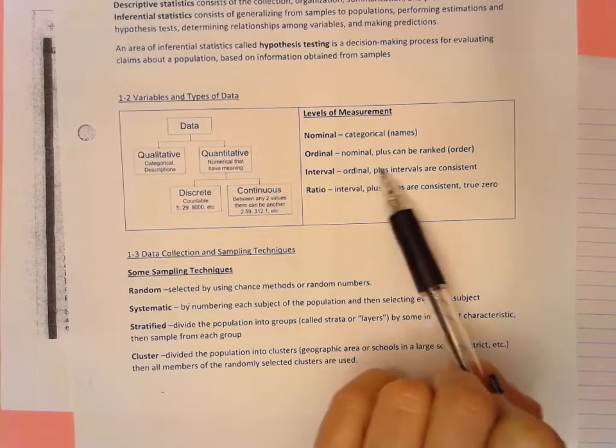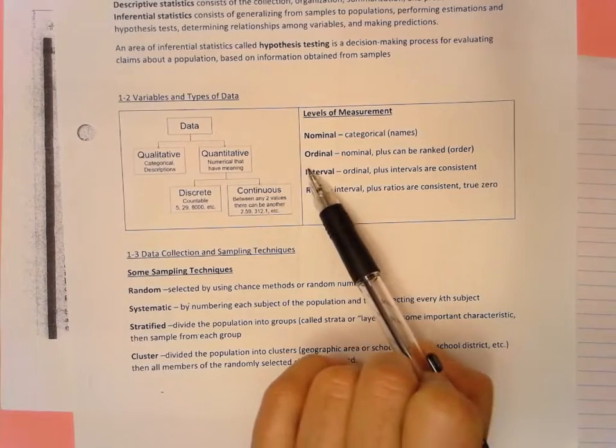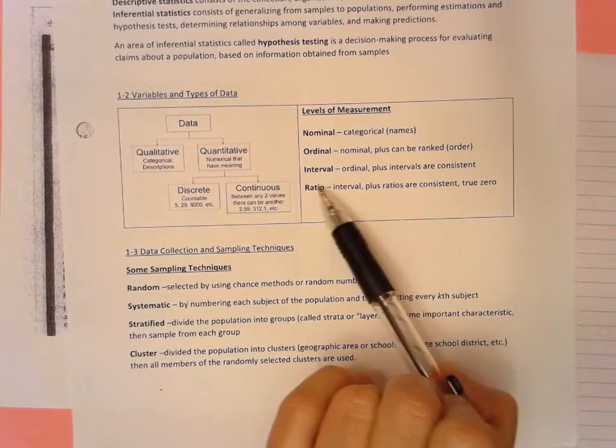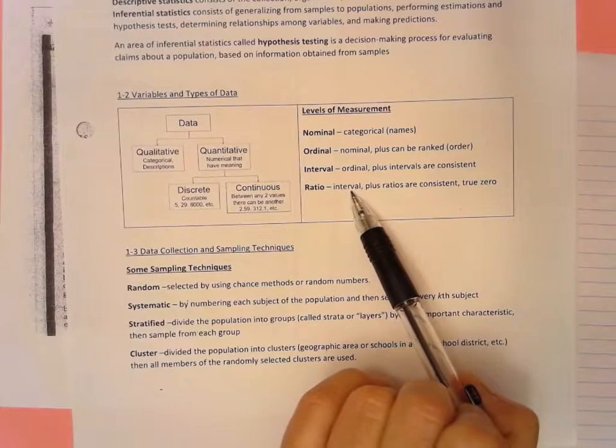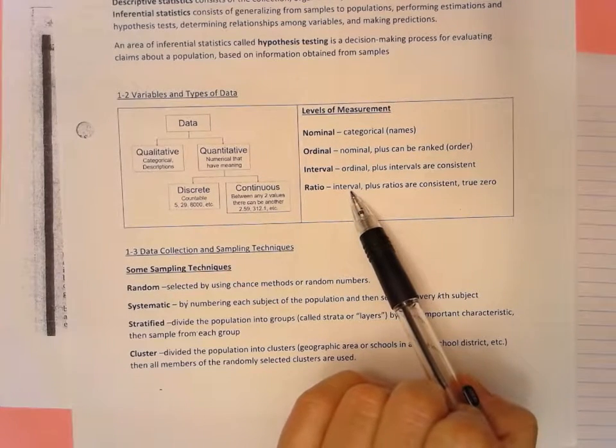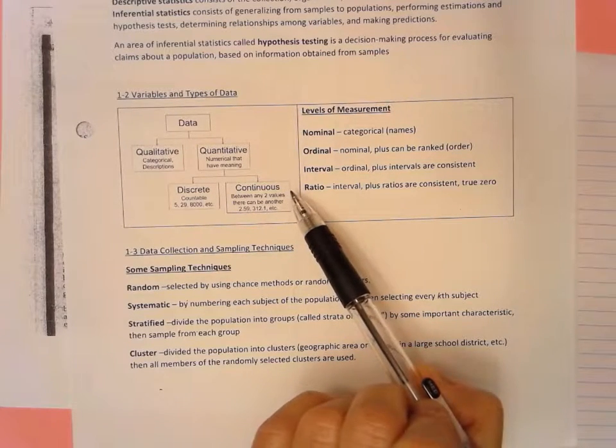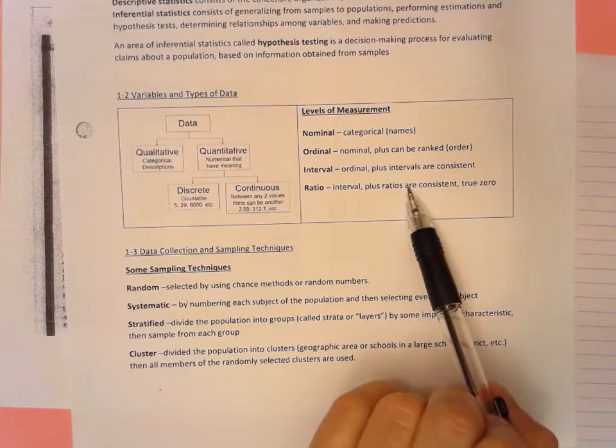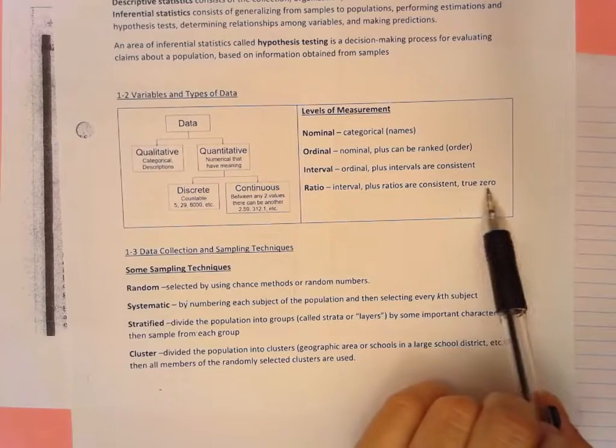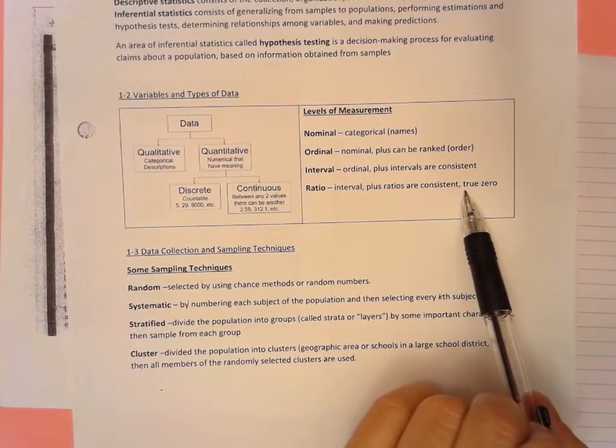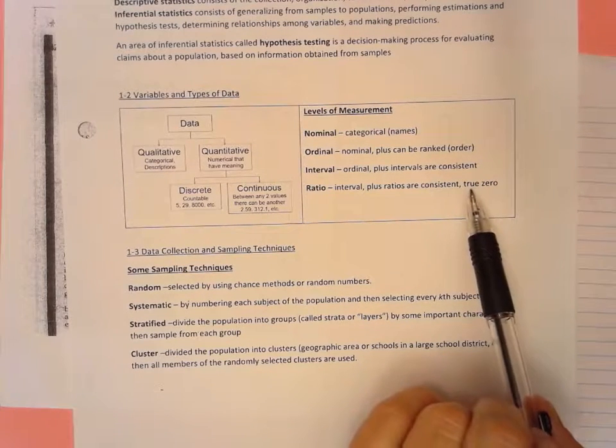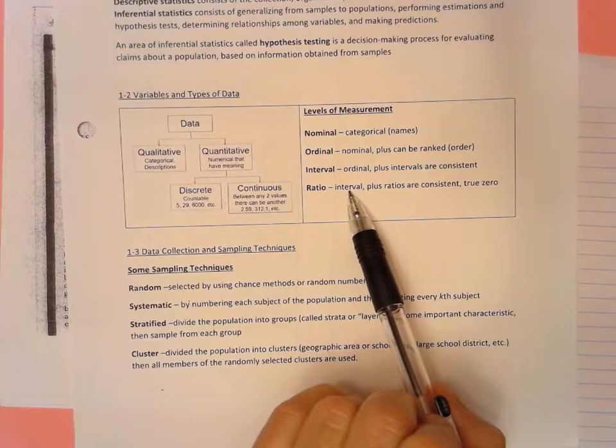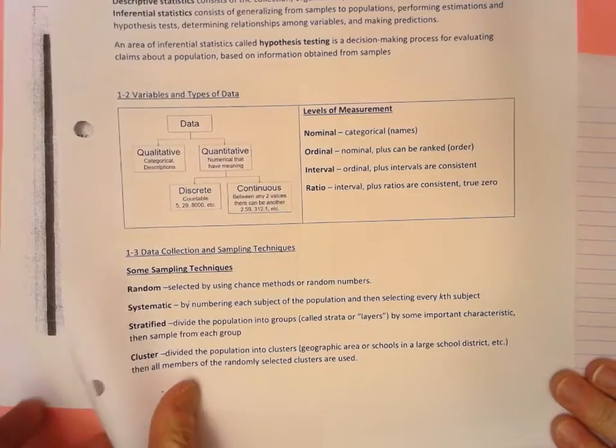Let's look at ratio. So interval is when you subtract the two numbers. Subtraction, differences make sense. Ratio, ratios, or division make sense. A way to say this is twice as many. Does twice as many make sense? So one person can drink twice as many number of drinks as another person. That makes sense. So ratios are consistent, and there's a true zero. This is just a litmus test for the ratio level. Zero drinks makes sense. So the number of drinks an adult consumes is quantitative, discrete, and has the ratio level, highest level of measurement.